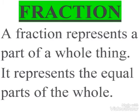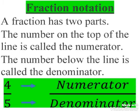Fraction notation. A fraction has two parts. The number on the top of the line is called the numerator. The number below the line is called the denominator. For example, 4 upon 5: here 4 is the numerator and 5 is the denominator.